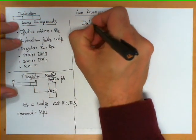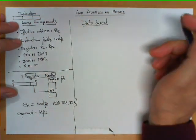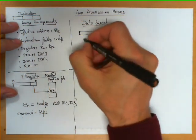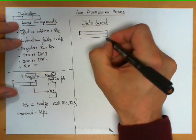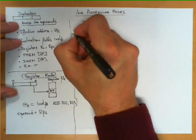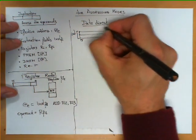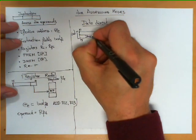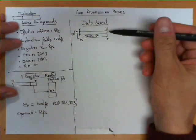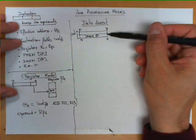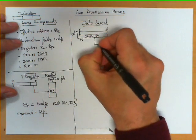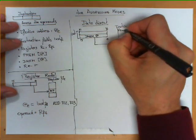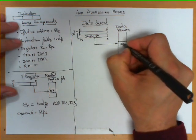The next addressing mode is called data direct. This is interesting because the instruction, which initially has 16 bits, is going to have a second set of 16 bits — making the full instruction 32 bits, from bit 0 to 15 and bit 16 to 31. The second group of 16 bits defines a data memory address. In other words, data direct assumes that after the first 16 bits encoding the instruction, there are an additional 16 bits containing an address, and that address is taken directly to access the data memory where we find the operand.